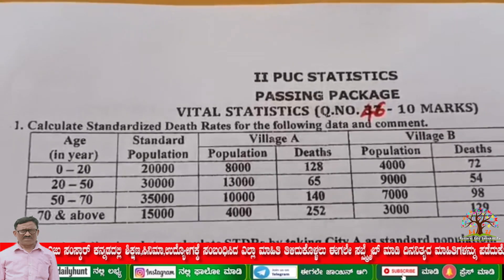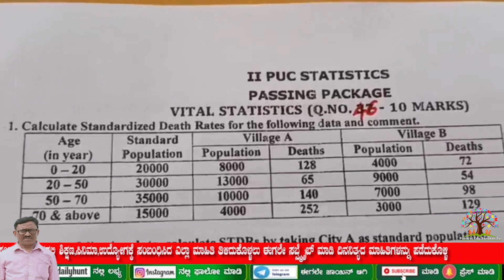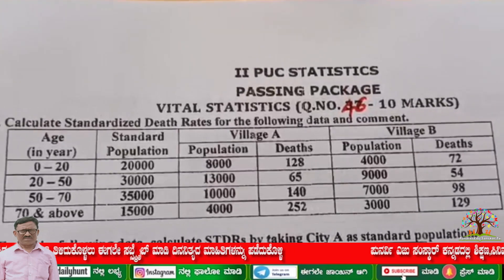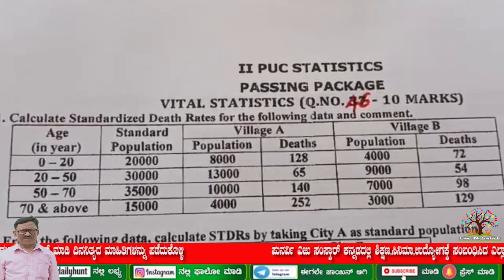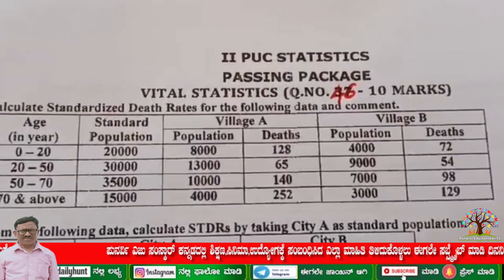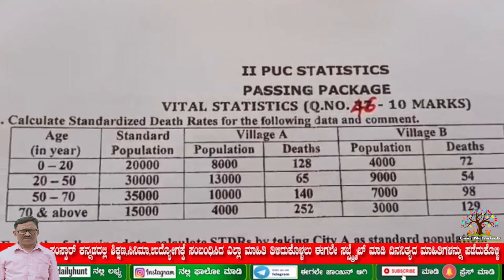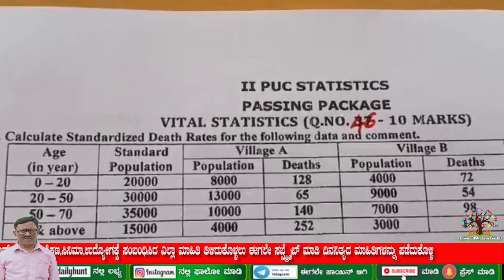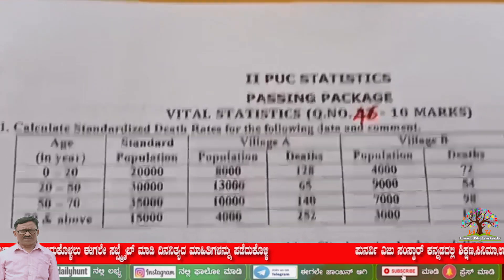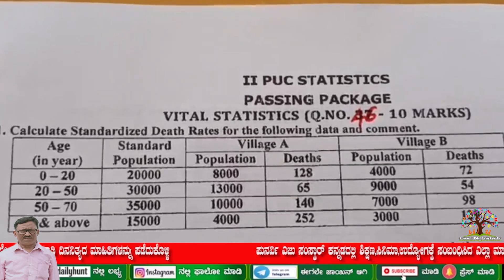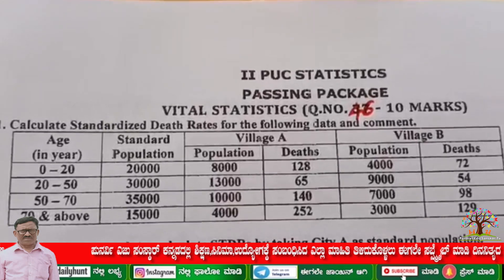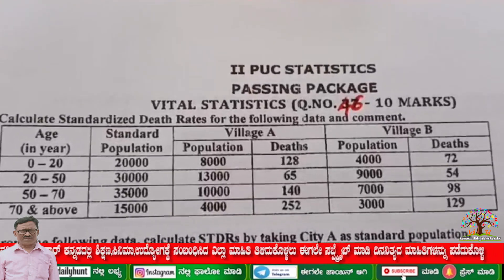Consider the first question: calculate standardized death rates for the following data and comment. The columns given are age, standard population, village A population and deaths, and village B population and deaths. You have to calculate STDR for both villages. The standard population is common for both, so you have to make two tables separately — one for village A and one for village B.